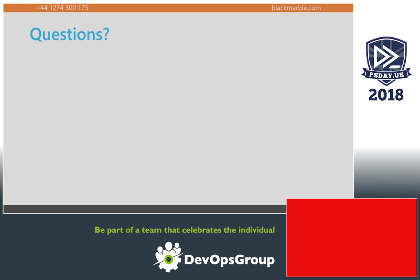Q: We have a module with both cmdlets (compiled DLLs) and PowerShell functions — any tips on building that and exporting members? A: You'd probably build it with MSBuild or Visual Studio for the cmdlets, then write a custom function in your build step to parse those compiled cmdlets, figure out what they are, and add them to CmdletsToExport. Similar to how I do FunctionsToExport — add the DLL, figure out what's in it, export it. You'd use nested modules to import the DLL.